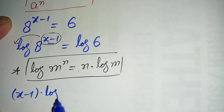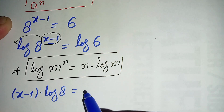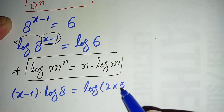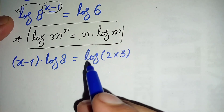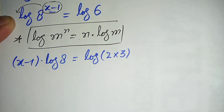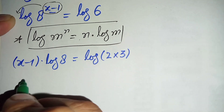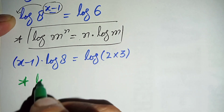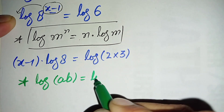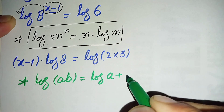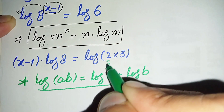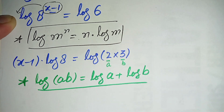We can write 6 as 2 times 3. On the right hand side, we use the log product rule: log of a times b equals log of a plus log of b. So the equation becomes (x − 1) times log of 8 is equal to log of 2 plus log of 3.